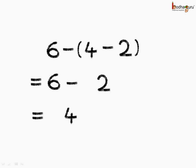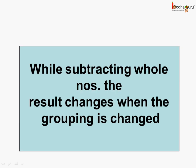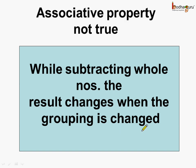So, what do we see? When we change the grouping for subtraction, the answer is not the same. That tells us that while subtracting whole numbers, the result changes when the grouping is changed. So, we can say associative property does not hold true for subtraction of whole numbers.